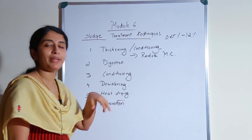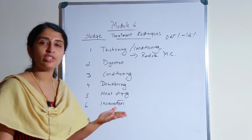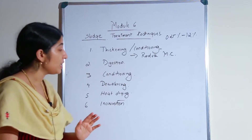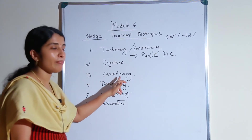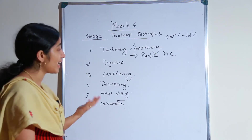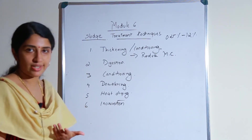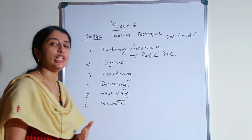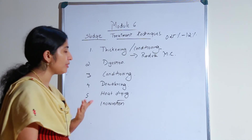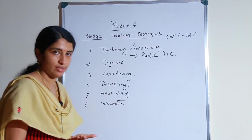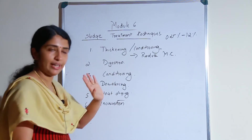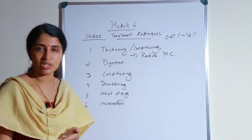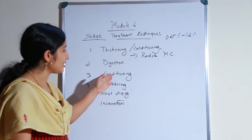The third step is conditioning. Conditioning means to prepare the sludge for the dewatering process, which is the next treatment step. So conditioning enhances the drainability of the sludge and makes it capable for the dewatering process. Conditioning is done with the use of different chemical conditioners.